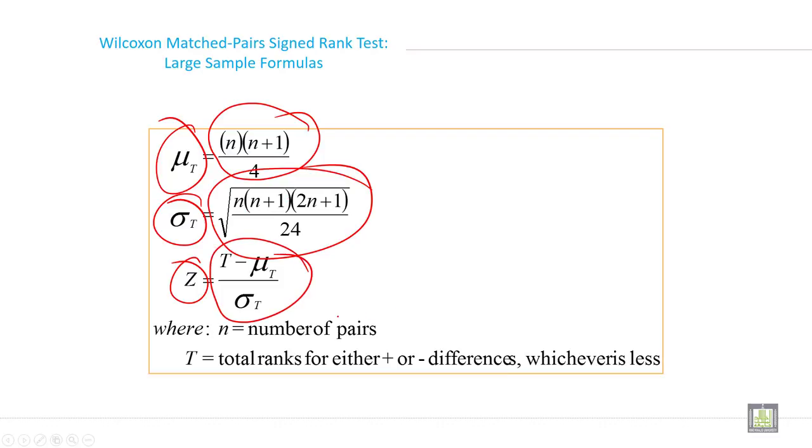Where N is number of pairs, T equals total rank for either plus or minus differences, whichever is less.